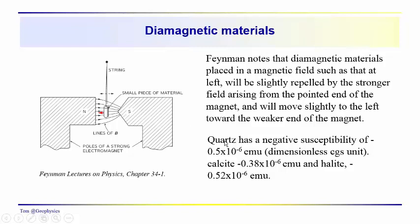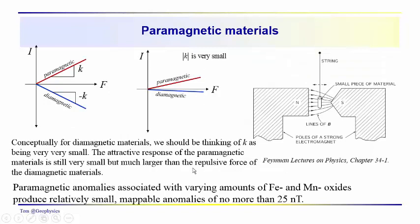Examples of diamagnetic materials include quartz with a susceptibility of 0.5 times 10 to the minus sixth CGS units, calcite, and halite — these are really small. If you take a look at magnetite, for example, the susceptibilities are going to be on the order of 10 to the sixth times this susceptibility, so it's a very small susceptibility for diamagnetics.